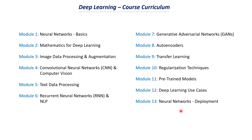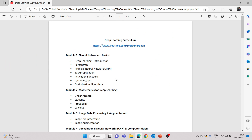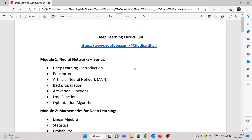Now I'll tell you what are all the topics that we will be covering in each of these modules. I'll give you a PDF file — the link will be in the video description so you can download this file and keep it for reference. This is a tentative curriculum; I may add or remove a few topics based on the requirement of the course. The first module covers introduction to deep learning, perceptron, how to build a perceptron in Python, and how to train an artificial neural network in Python.